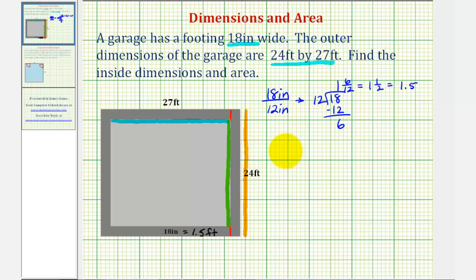So again, if we start with 24 and we subtract 1.5 twice, that's the same as subtracting three, the inside length would be 21 feet.